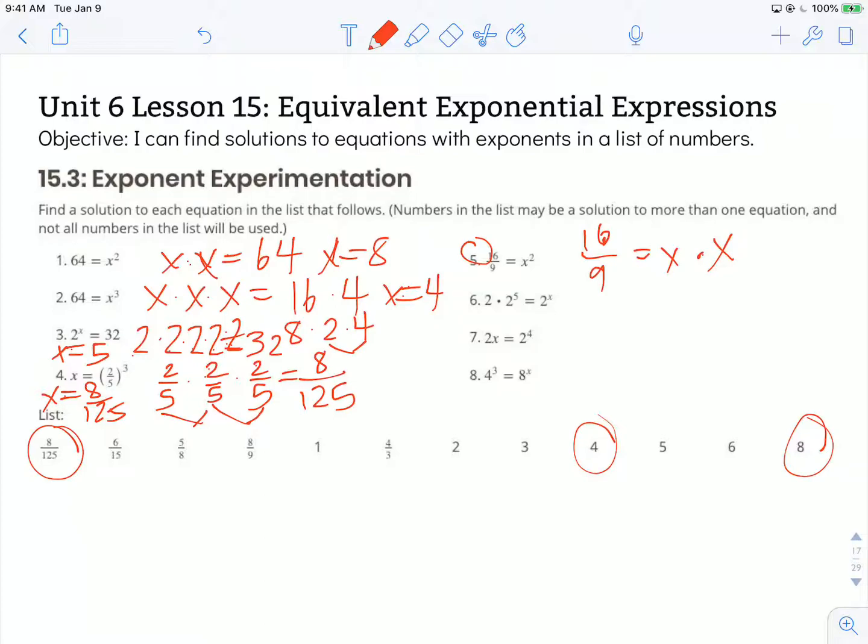If I want to get 16 in the numerator and I only have two factors, I have to multiply 4 times 4 to get that 16. So I know my numerator is 4, and if I scan this list, there's only one fraction that has a numerator 4, so I bet the solution is 4/3. So let's put 3 on the bottom and see if we get 9. 3 times 3 is 9. So my solution for number 5 is x is equal to 4/3.